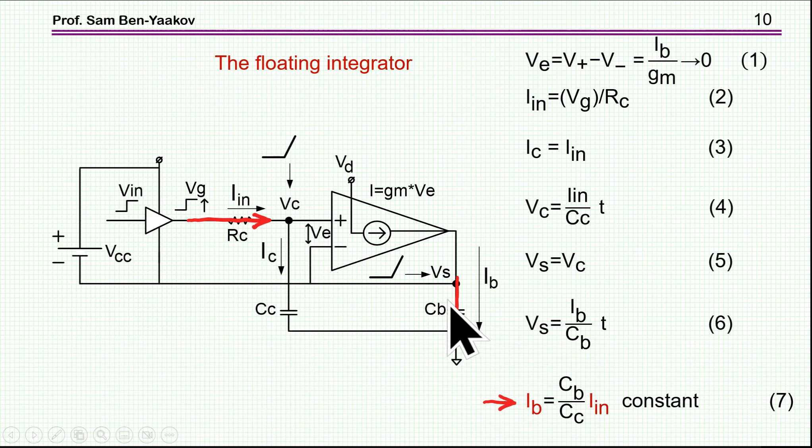Now since the voltage between the terminals is approaching zero, this is also the voltage here, which is the voltage on this capacitor which is being charged. So consequently, the voltage of this capacitor will also rise linearly and the current of it will be a reflection of the current here scaled by this ratio. So the current, the charging current is the ratio of these capacitances times the input current. So therefore, we have here an arrangement that will charge a capacitor by a constant current.